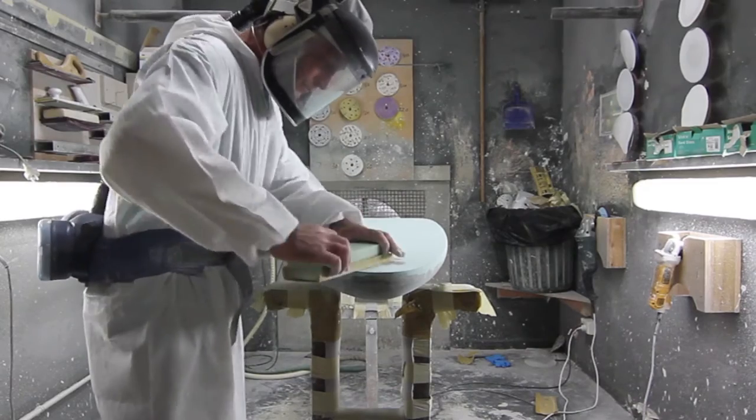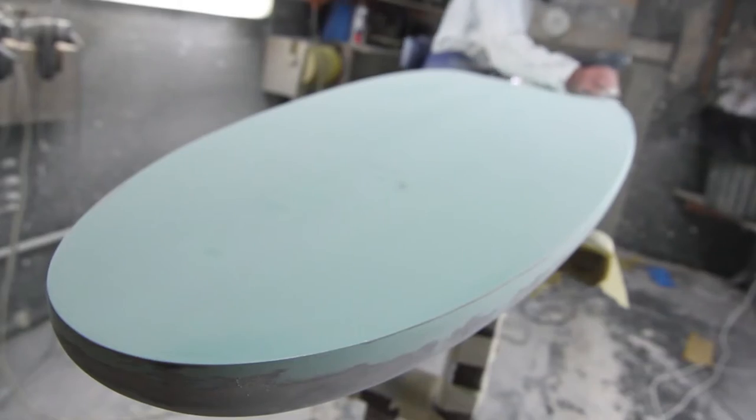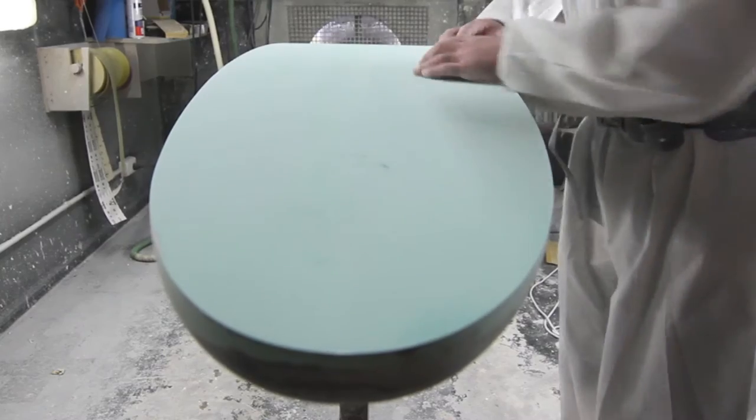Sand the board right through to 240 and then finish it off at 320, and then you're ready for your top coat of paint.